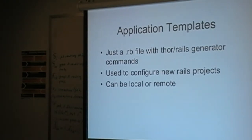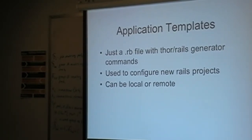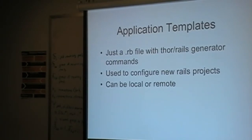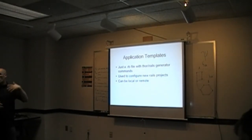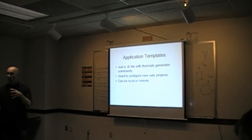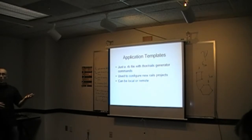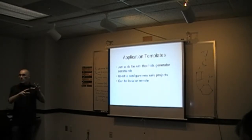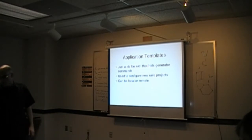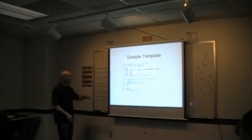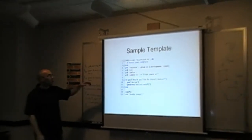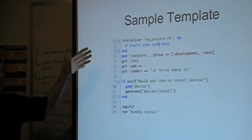The third way that Rails generator syntax drifts into projects is through application templates. These are just .rb files that can exist anywhere — on your local system or on a remote server. When you're creating a new Rails project, you often want to configure it in some way. If you work at a company, you may have a set of core gems you're always installing, and an application template is a nice way to codify that knowledge into something you can pass into the new project command so you don't have to do a lot of manual configuration.